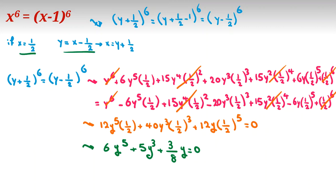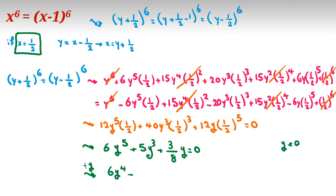One answer is y equals zero, which corresponds to x equals one half. Since we've already accounted for y equals zero, we now divide both sides by y, giving: 6y⁴ plus 5y² plus 3/8 equal to zero.